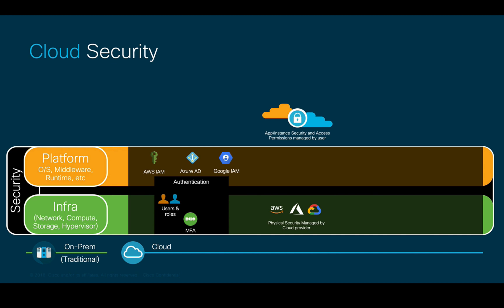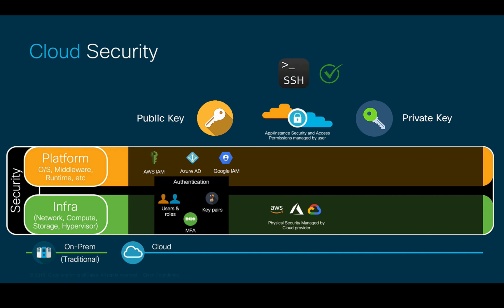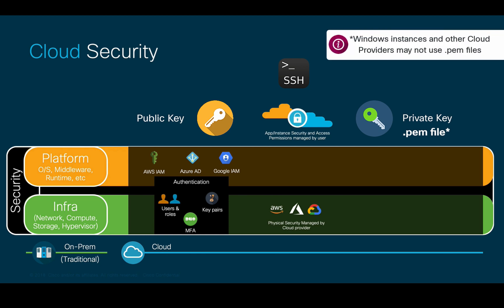Additional security options for accessing cloud consoles may include multi-factor authentication, which is highly recommended. When accessing instances or VMs you deploy in the cloud, public cloud compute services mostly rely on key pairs to allow access via SSH. A key pair consists of a private key and a public key and is used to prove your identity when connecting to an instance. Some cloud providers like AWS store the EC2 instance public key, and you store the private key, which is usually a .pem file.